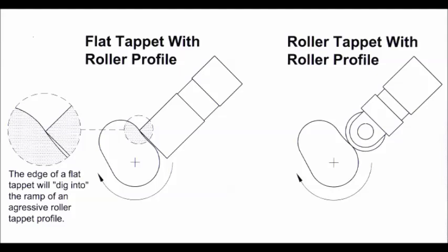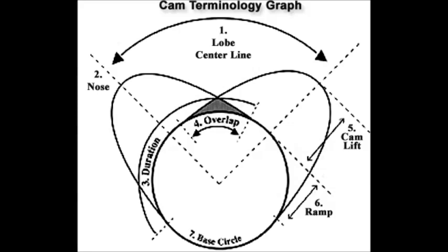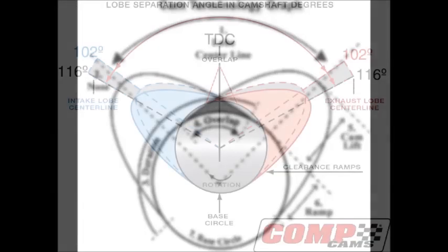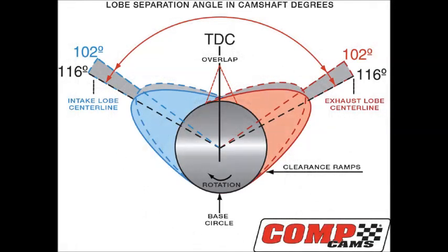The confusing thing about duration is the difference between advertised and 50-thou lift duration. A 50-thou lift duration is measured from the point where the cam moves up the lifter 50 thousandths of an inch until 50 thousandths of an inch before the lifter is all the way back down on the base circle. Most cam manufacturers differ on where they start and finish measuring advertised duration — some start at 4 thousandths lift, some at 8 thousandths, and others somewhere in between. That's why the 50 thousandths lift number is the best to go by.